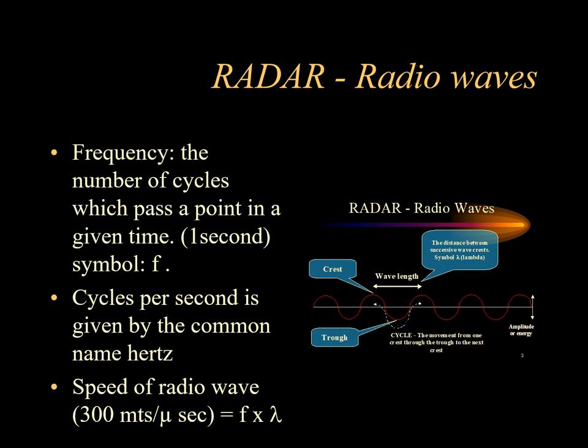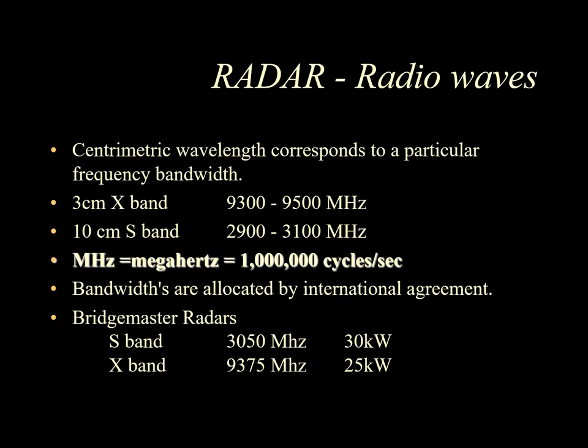The frequency is the number of cycles which pass a point in a given time, normally measured per second. The symbol for frequency is F, and cycles per second are given the common name Hertz. Wavelength and frequency are linked by the formula: speed of the radio wave — approximately 300 meters per microsecond — equals frequency multiplied by wavelength. The centimeter wavelength corresponds to a particular frequency bandwidth, allocated by international agreement for use by civil marine radar systems.